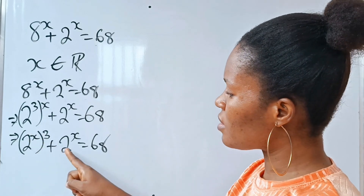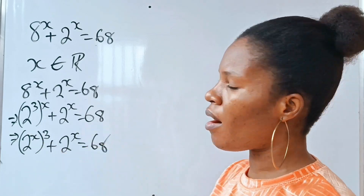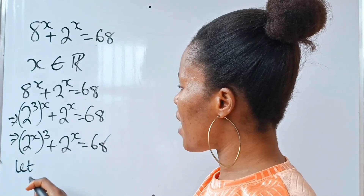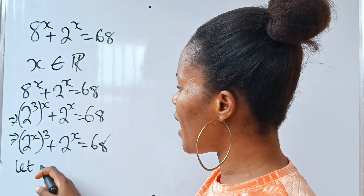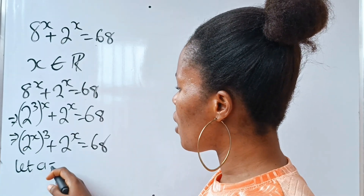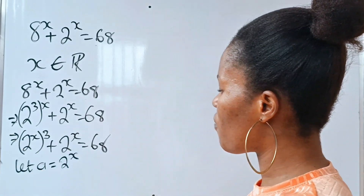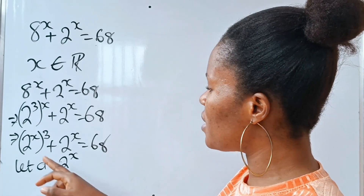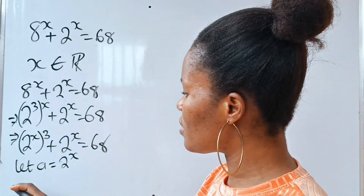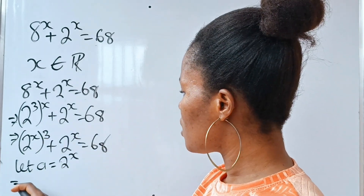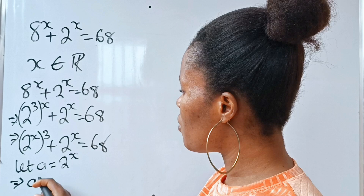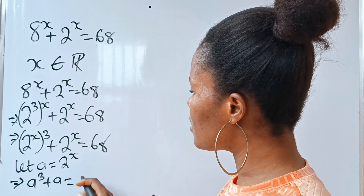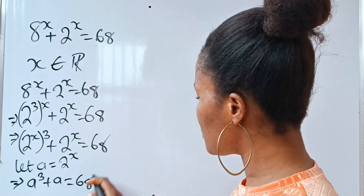Now we have 2 to the power of x appearing twice. Let's simplify by letting a equal 2 to the power of x. If we say that, we can rewrite this equation as a raised to the power of 3 plus a is equal to 68.